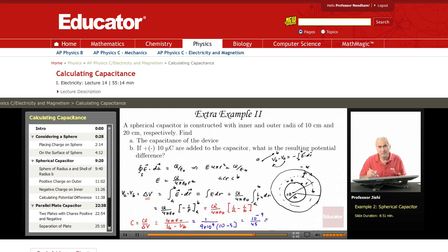So this is 10 to the minus 9 divided by 45. So it's about 2.2 times 10 to the minus 11 farads, or about 22 picofarads. This is the capacitor.